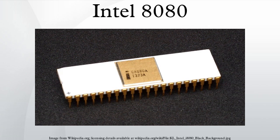Although the 8080 is generally an 8-bit processor, it also has limited abilities to perform 16-bit operations. Any of the three 16-bit register pairs or SP can be loaded with an immediate 16-bit value, incremented, decremented, or added to HL. The XCHG instruction exchanges the values of the HL and DE register pairs. By adding HL to itself, it is possible to achieve the same result as a 16-bit arithmetical left shift with one instruction.